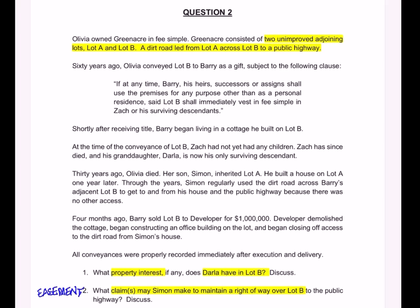The clause states: if, at any time, Barry, his heirs, successors, or assigns shall use the premises for any purpose other than as a personal residence, said Lot B shall immediately vest in fee simple in Zach or his surviving descendants. So this is a condition on the conveyance. I'm looking at present estates and future estates — I need to figure out what kind of an estate Barry has been given.